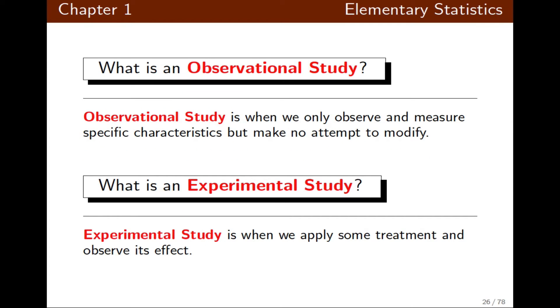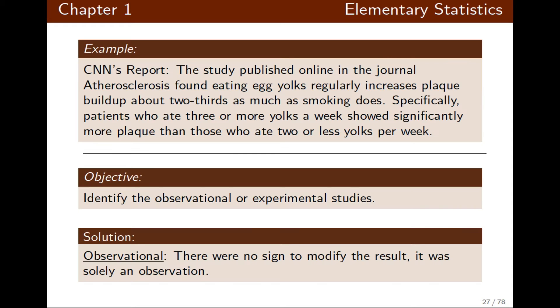In this example by CNN's report, we want to identify if it's observational or experimental studies. Once we read this example, we notice that there were no signs, no attempt to modify the result. Therefore, it is considered an observational study.